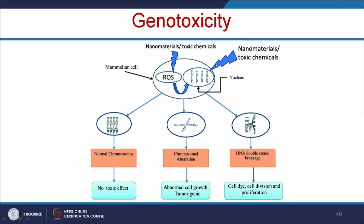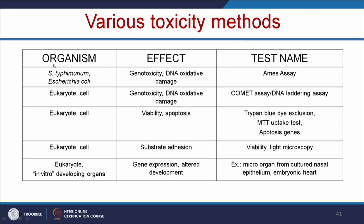When cells are exposed to nanomaterials, there may be chances of chromosomal aberration. If normal chromosomes show no toxic effect, but chromosomal aberration is identified, it can lead to abnormal cell growth and the compound may be tumorigenic. We can also understand genotoxicity by studying DNA double-strand breakage, using various nucleostains, and studying cell division and proliferation. We can use Salmonella typhimurium to understand whether a nanomaterial induces any mutation in genetic material — this assay is called the Ames assay. We can also use mammalian cell lines to understand DNA laddering, apoptosis using MTT assay and other apoptotic genes.